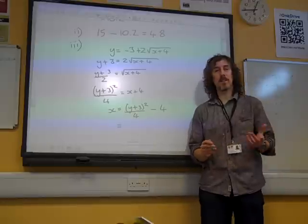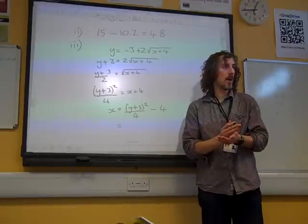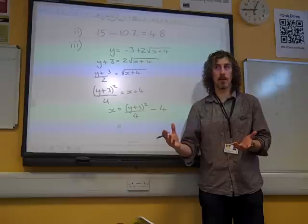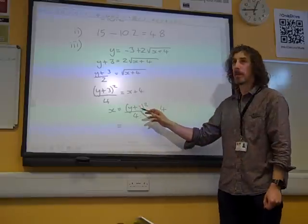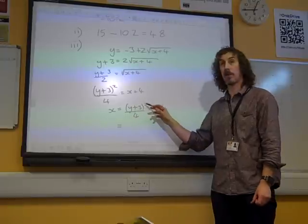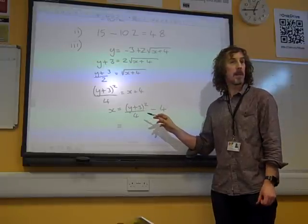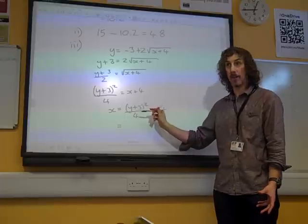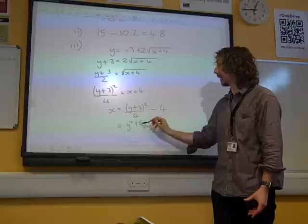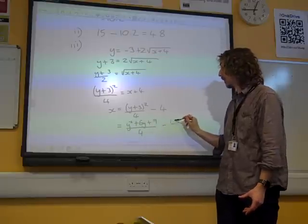And this is where, I know it's the end of the paper, and you've done so much, and you're looking at the clock and feeling slightly stressed. This is where people make mistakes with multiplying out the bracket y plus 3, and end up writing y squared plus 9. But even under pressure, we've got to be sure that we get this right. This is y squared plus 6y plus 9 over 4 minus 4.